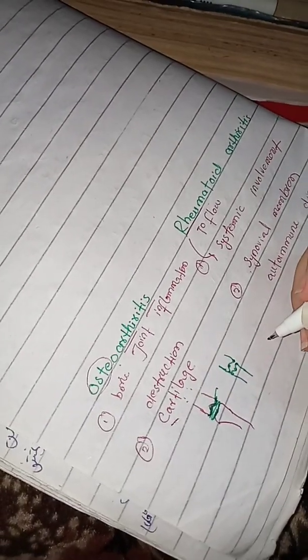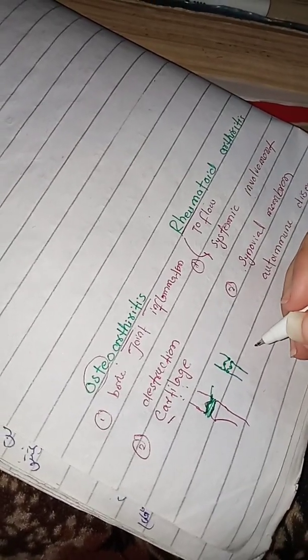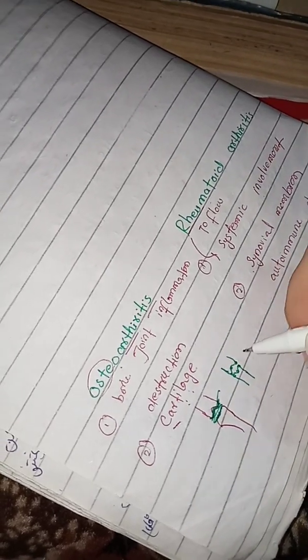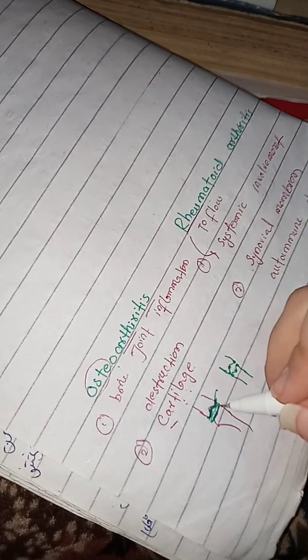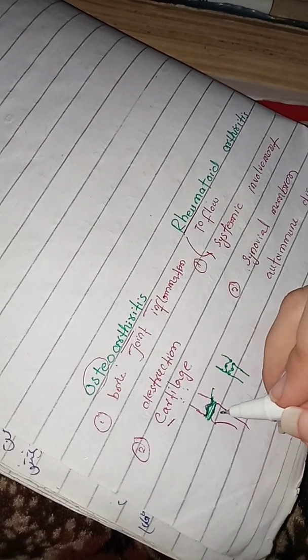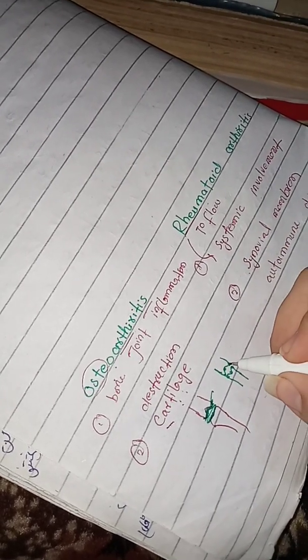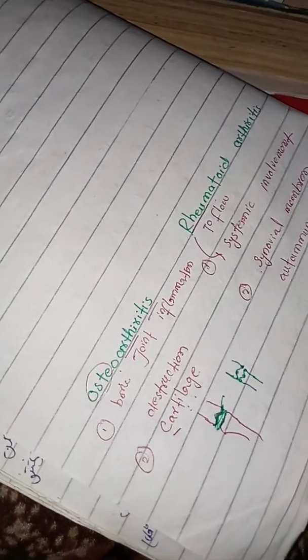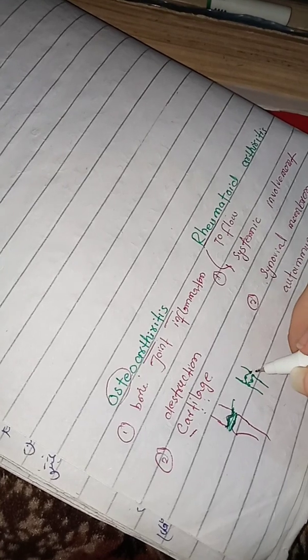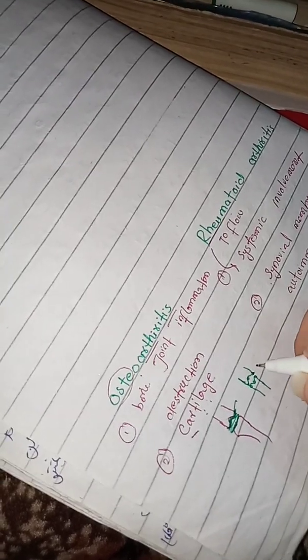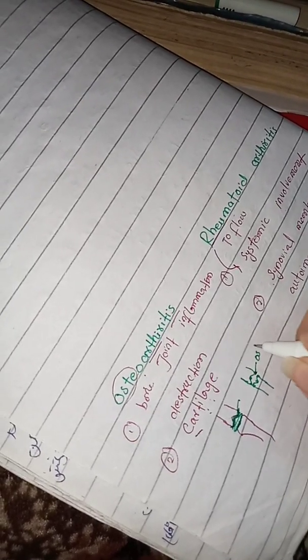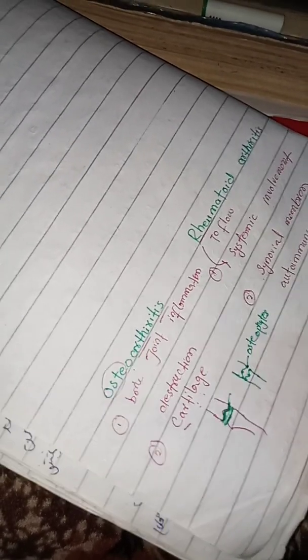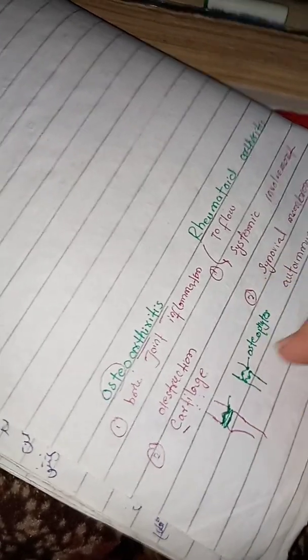Osteophytes form because when the body gets injured, it tries to heal itself. In order to heal the cartilage, the body produces osteophytes. This osteophyte formation is the characteristic morphological feature of osteoarthritis.